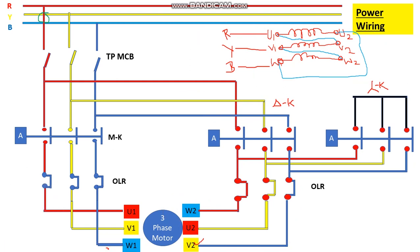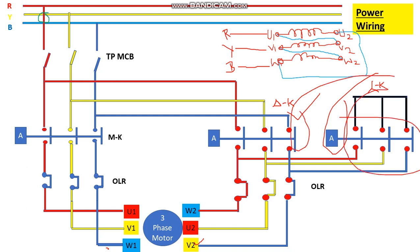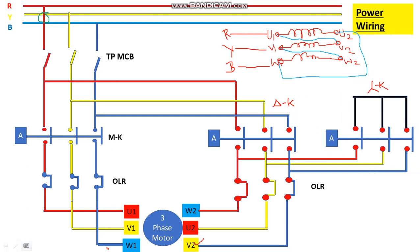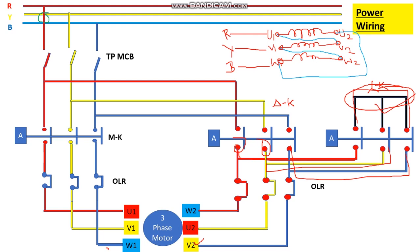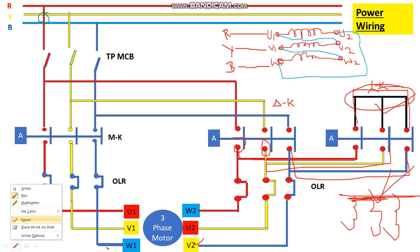For the star connection, we take wires from the output of the star contactor — R, Y, B — and short one end of all phases together. Shorting one end of all phases creates the star connection.